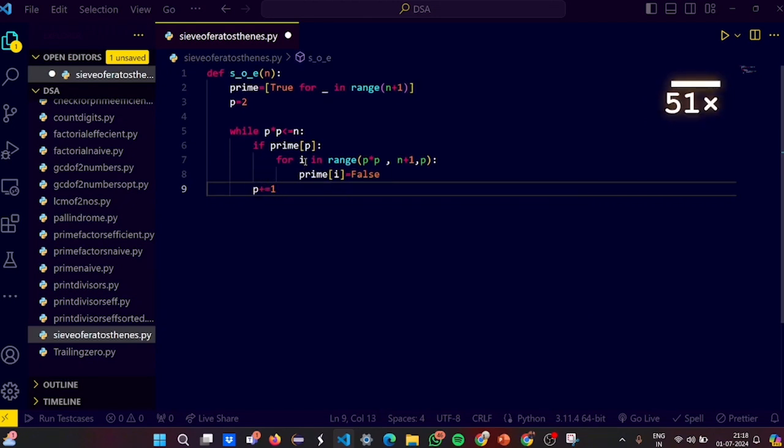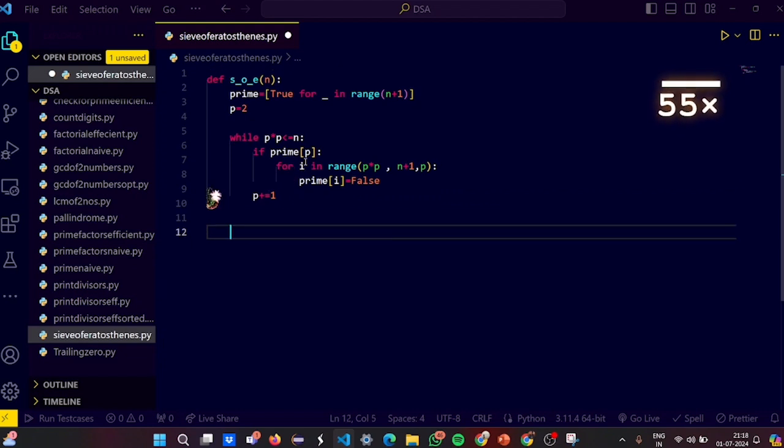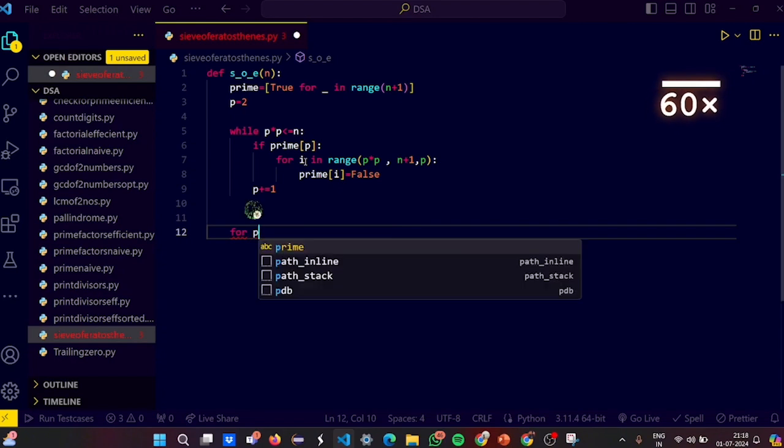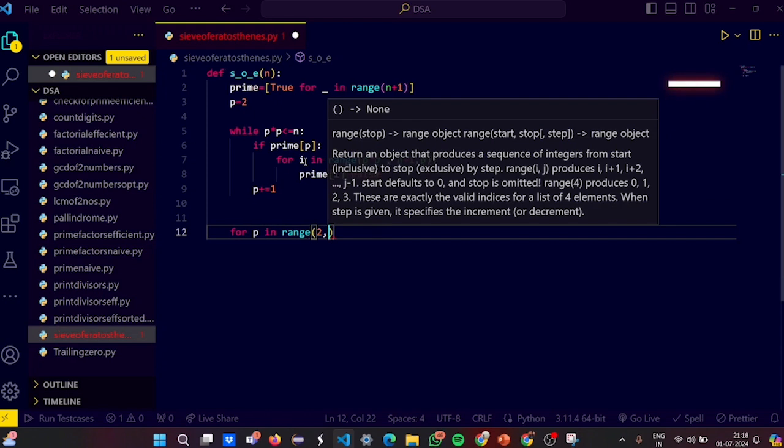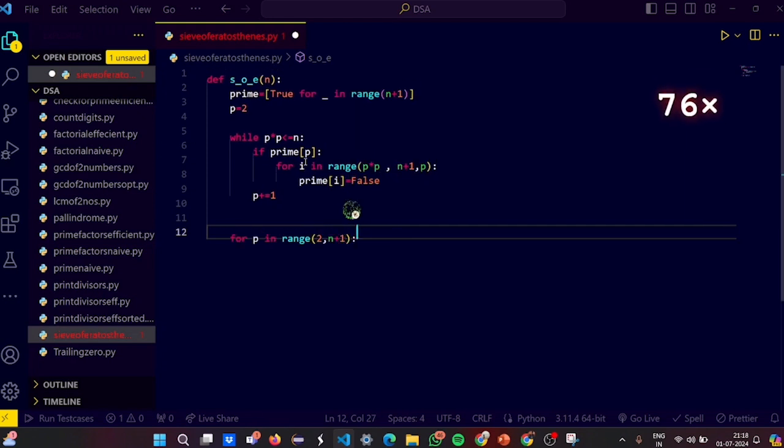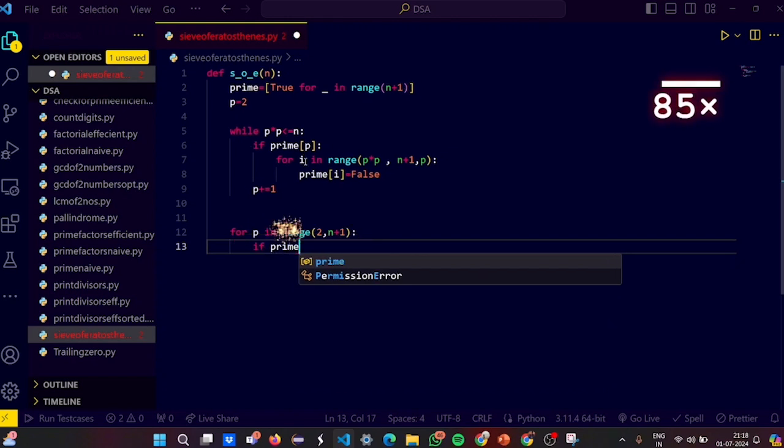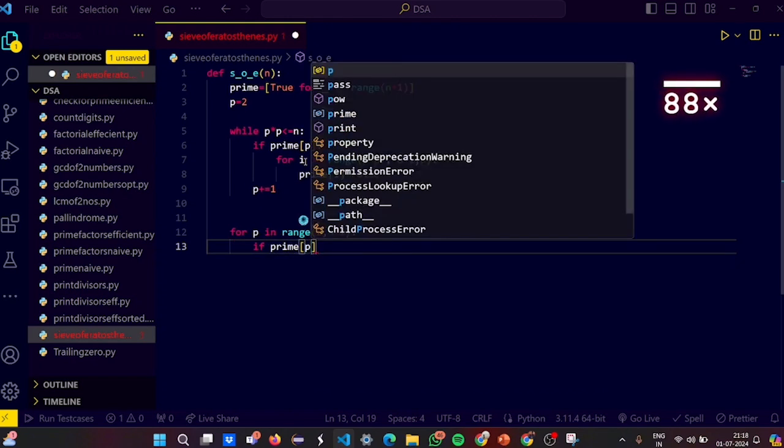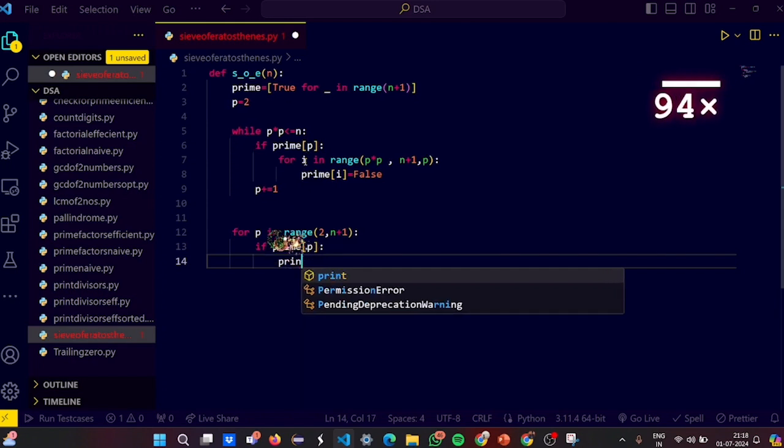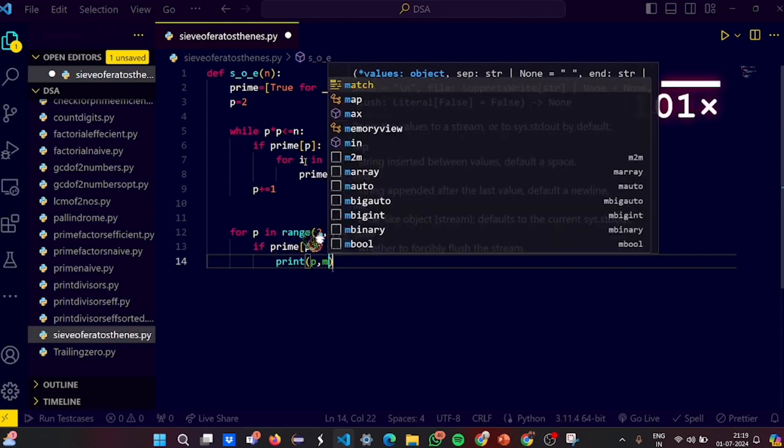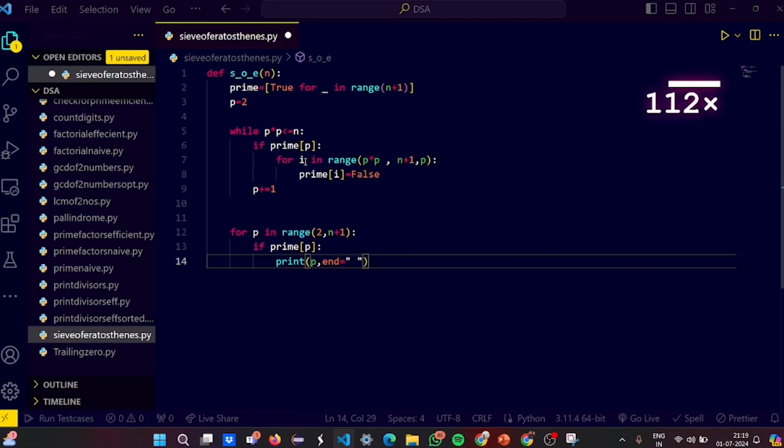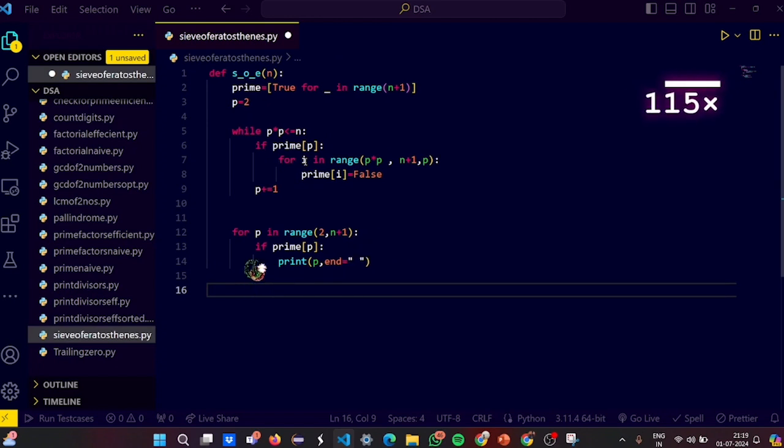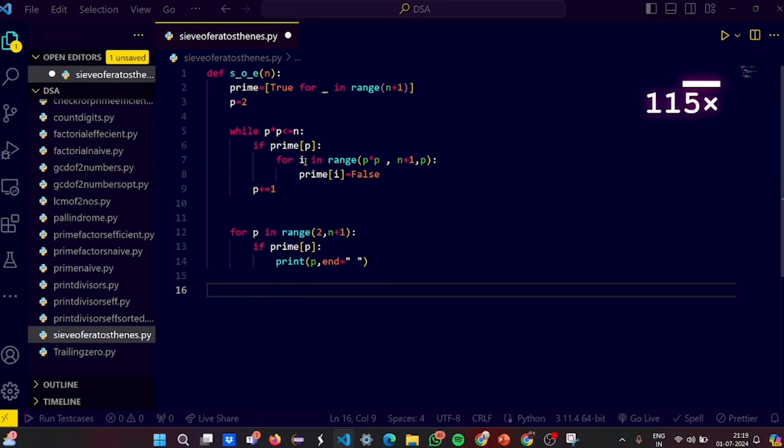Next let's print the prime. We will write a for loop again in range, starting from index 2 to n plus 1, moving forward. If prime p, print it. Print p comma. Then end. We have to end, end equals, let's put a space. Then see we are done. We are already done with the code. Now our job is to write the driver code. It's very simple guys. It's not that big of a deal. It's very simple.